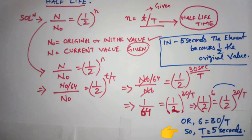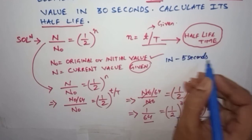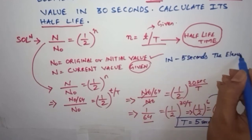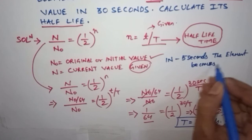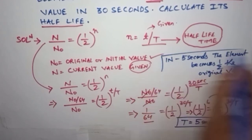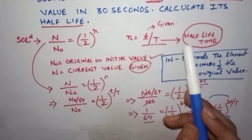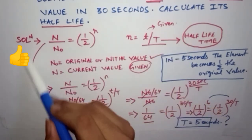So now what does T equals 5 seconds mean? That means in 5 seconds that radioactive element is reduced to half of its value. So whatever its original value was, it becomes half in 5 seconds. In this way we can calculate any half-life time.